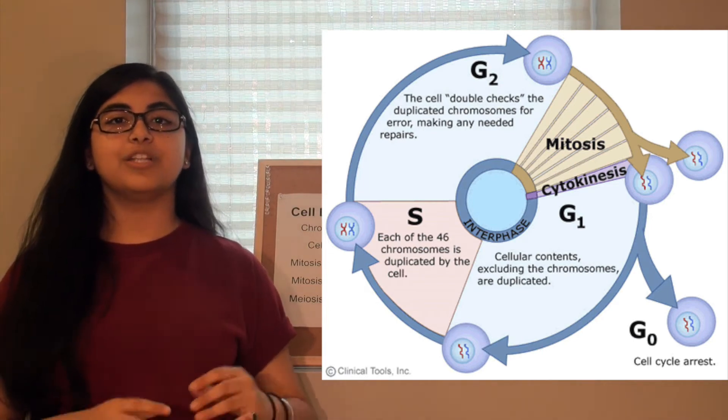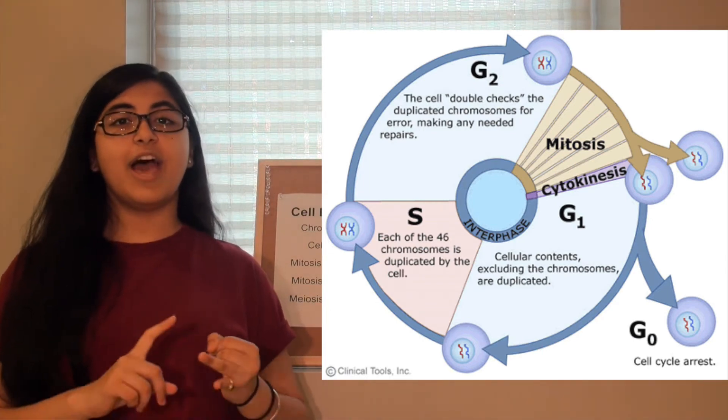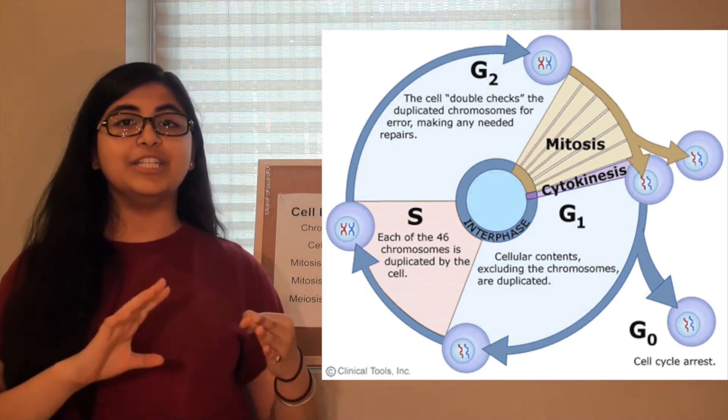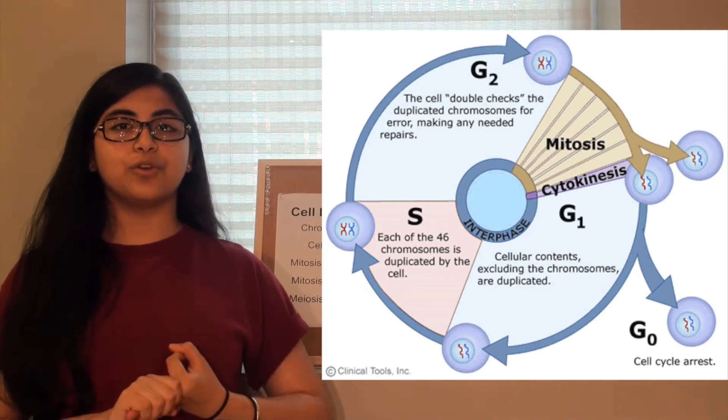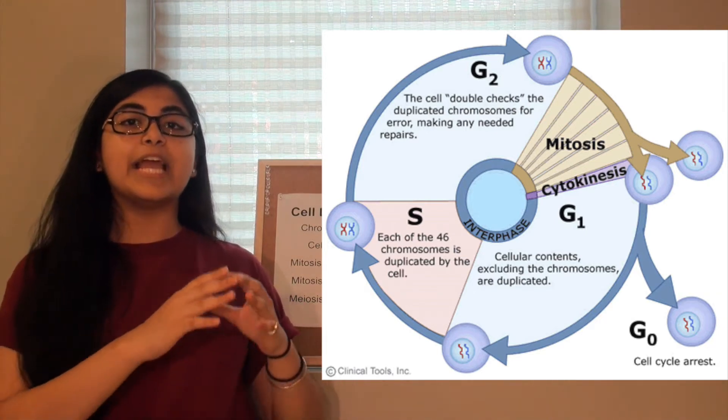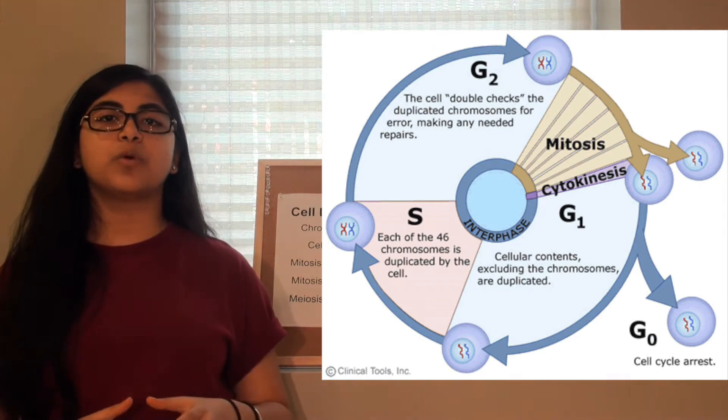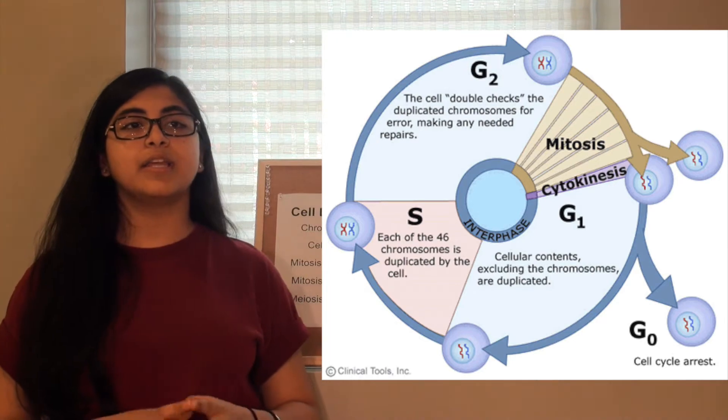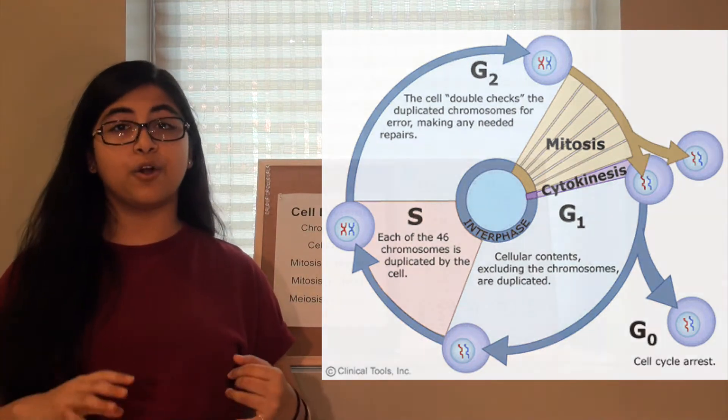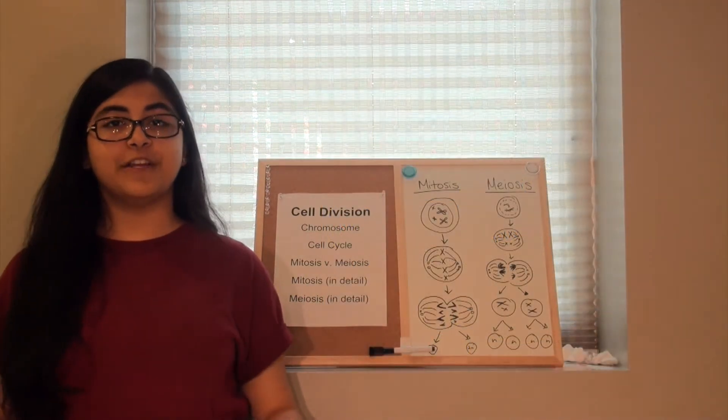You should note that G1 which stands for growth 1, S which stands for synthesis, and G2 which stands for growth 2, come together to create the interphase part of the cell cycle. The interphase is where the cell spends 90% of its life and is where the nucleoli are visible.